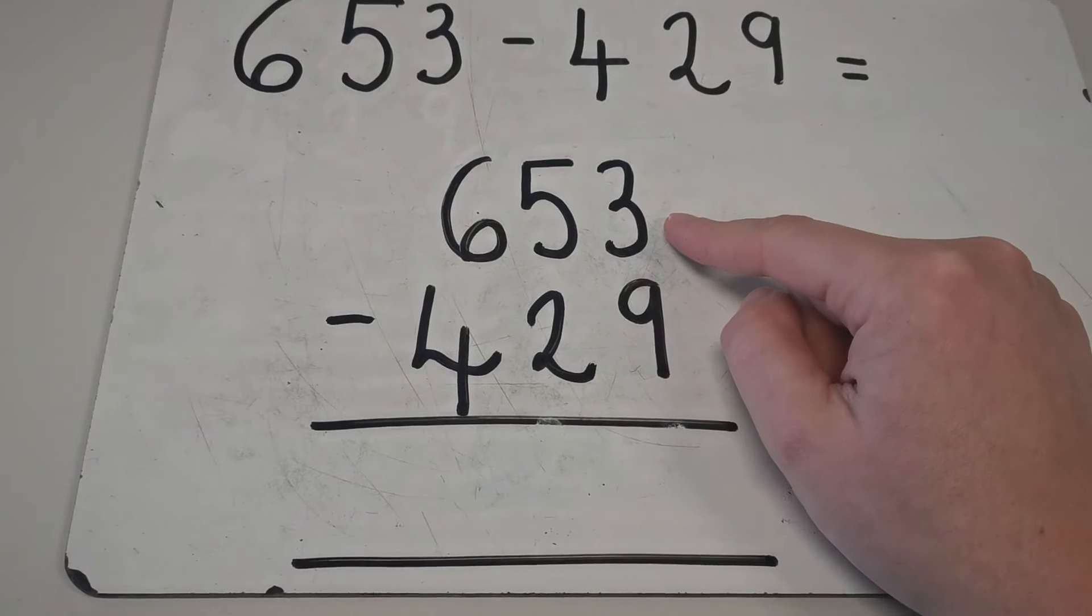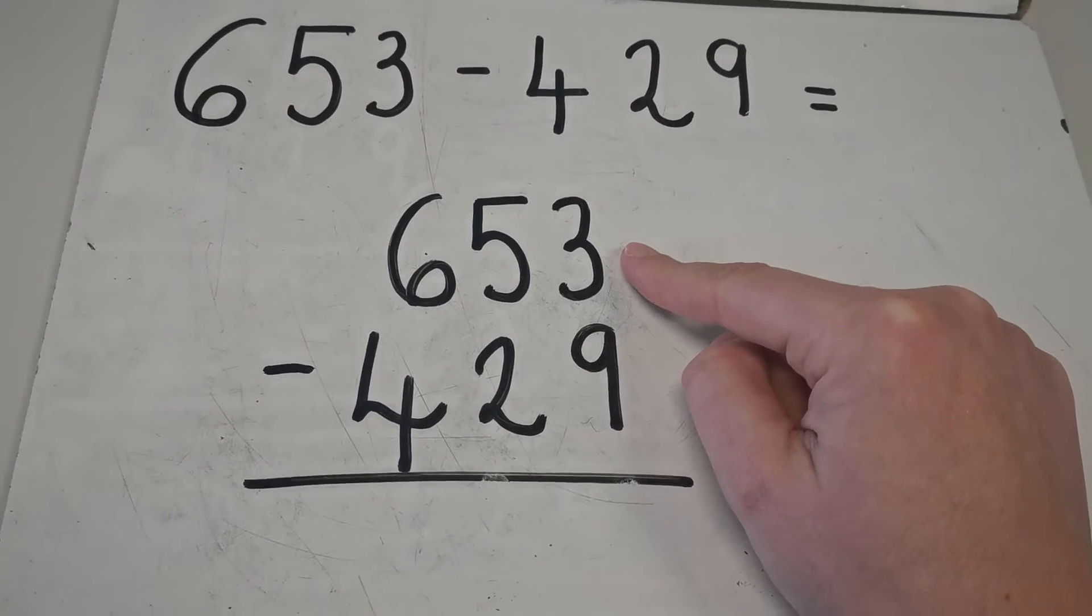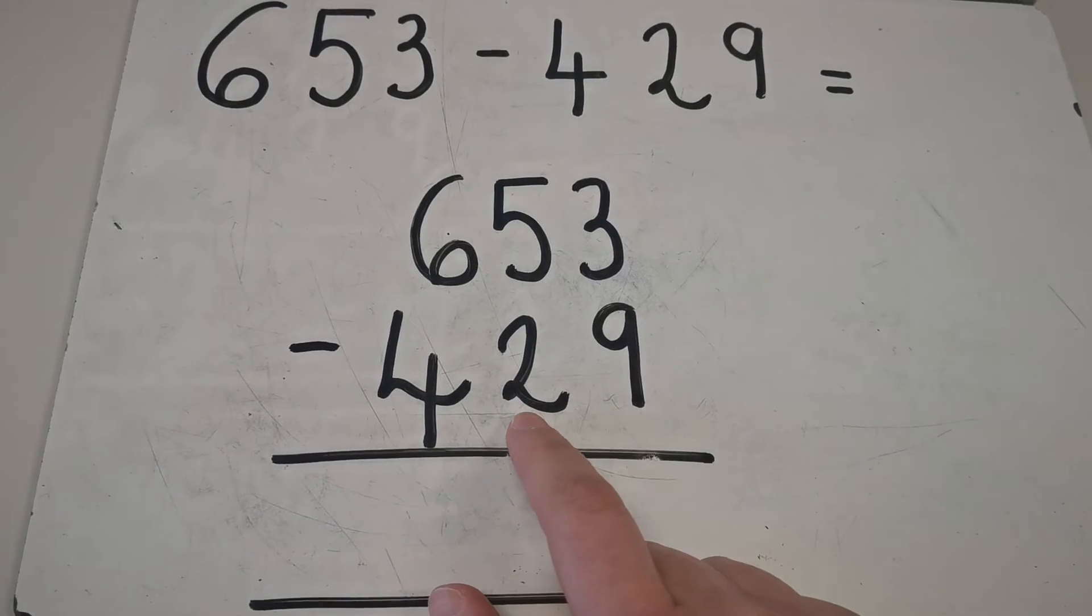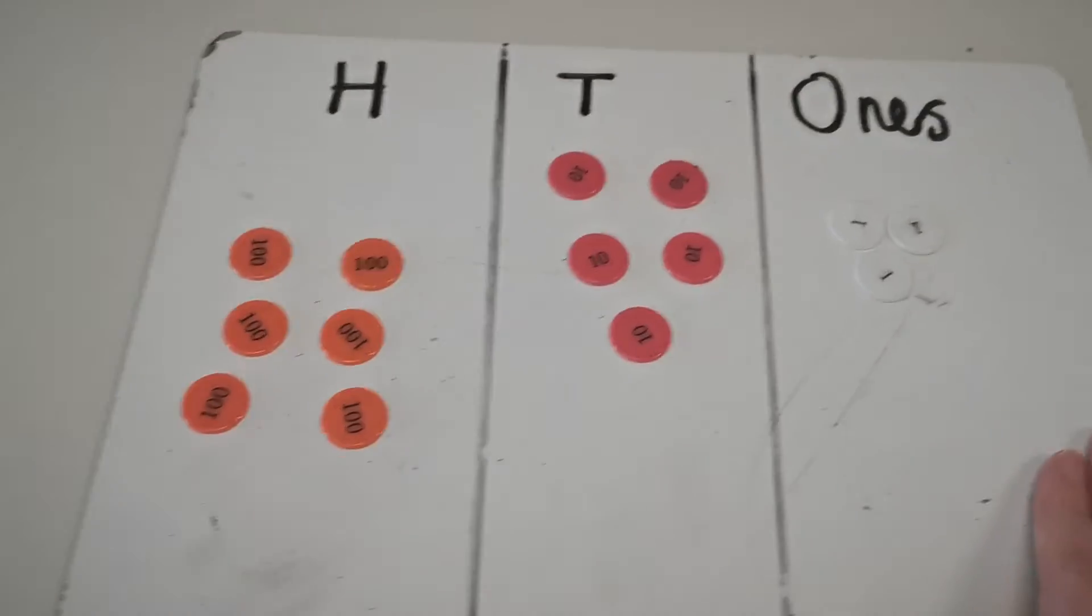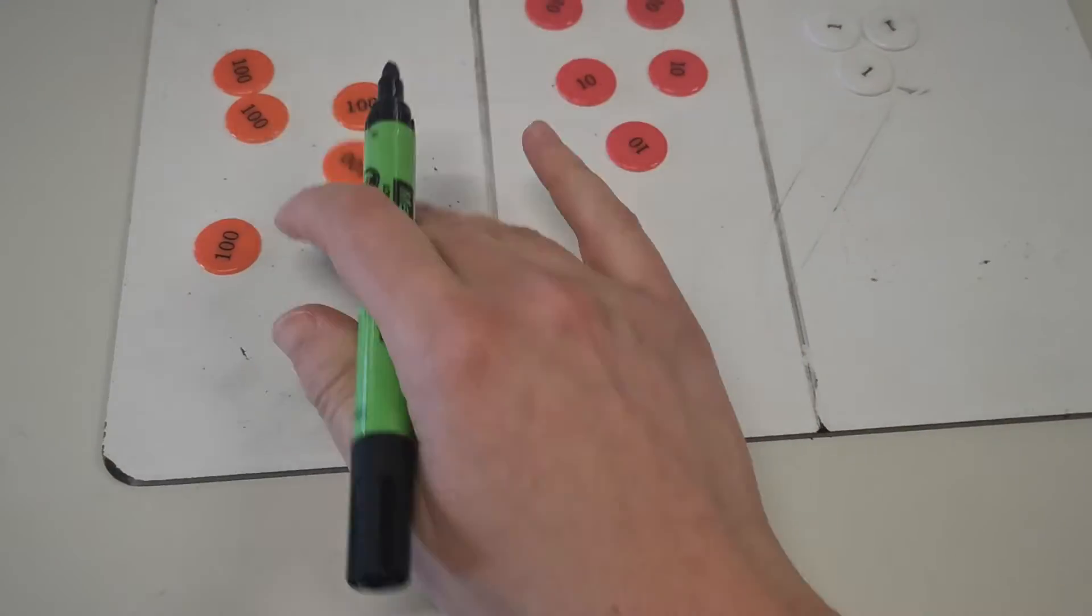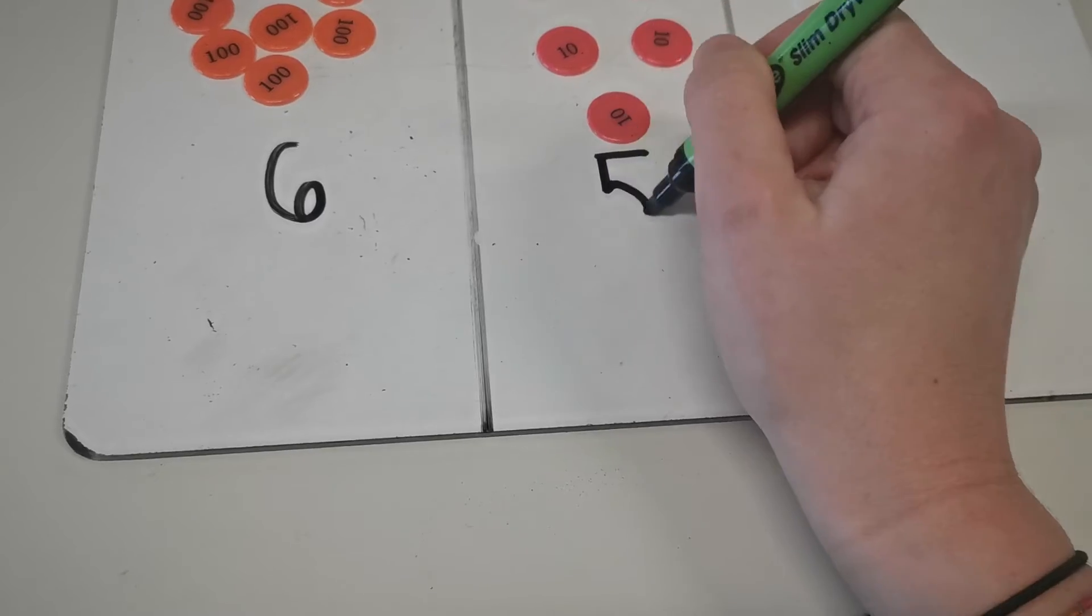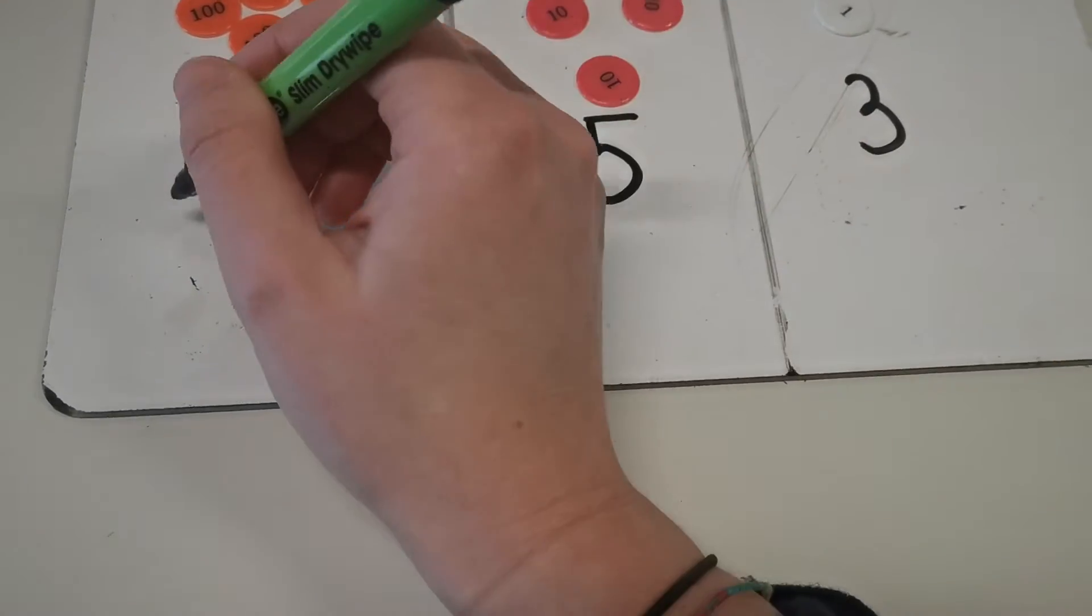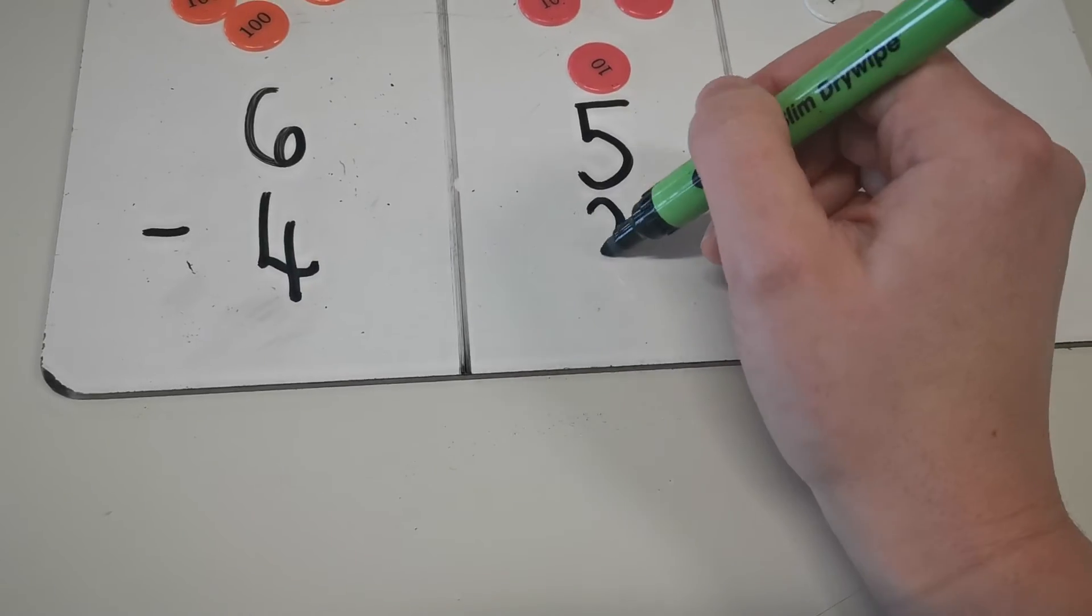So this is where we'll need to exchange our tens for some ones because we don't have enough. Let's have a look at the number. We've got 653 and we're subtracting 429. Straight away I can't subtract 9 from my 3.